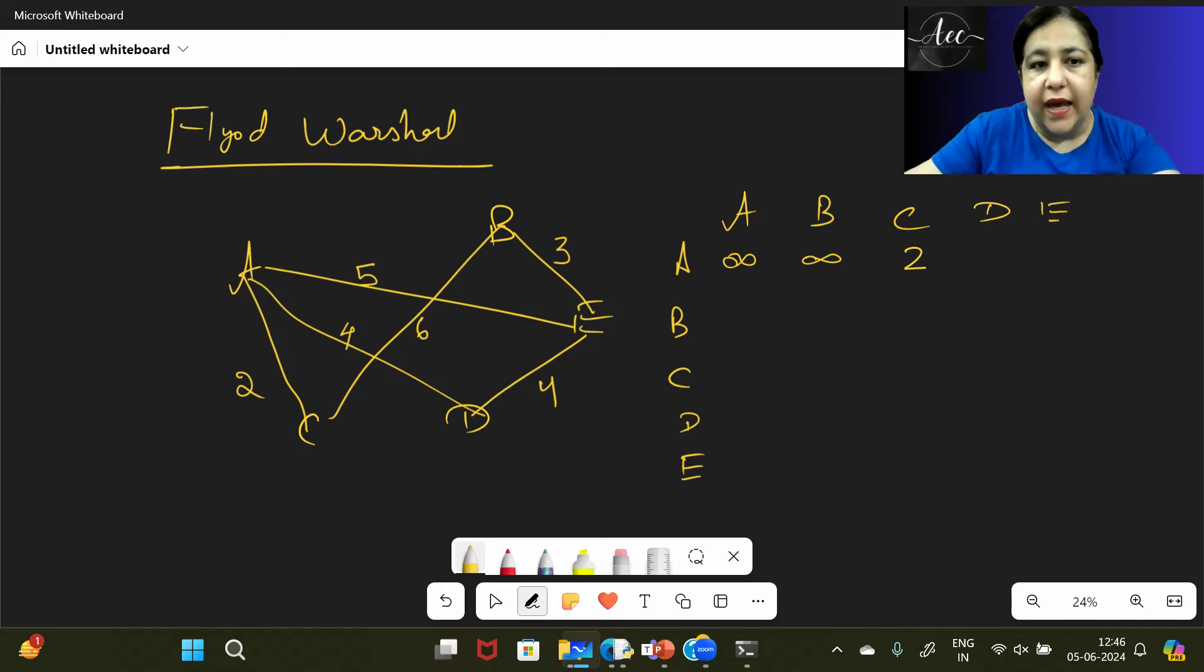Wherever we know the path, we will write the weight. So A to C is 2, A to D is 4, A to E is 5. Then similar way, C to A is 2, C to B is 6, C to C is not there, C to D is not there, C to E we don't have anything.